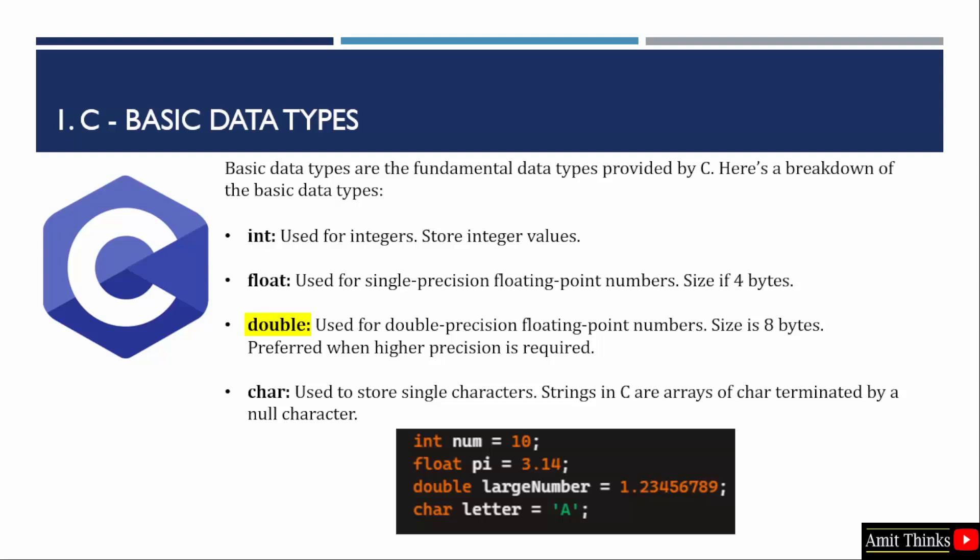Next comes float. Float is related to double. Let us understand them. Float and double are data types used to store floating point numbers but they have different characteristics in terms of precision and memory usage. Float is used for single precision floating point numbers whereas double is used for double precision floating point numbers. That means when you want higher precision, go for the double data type.